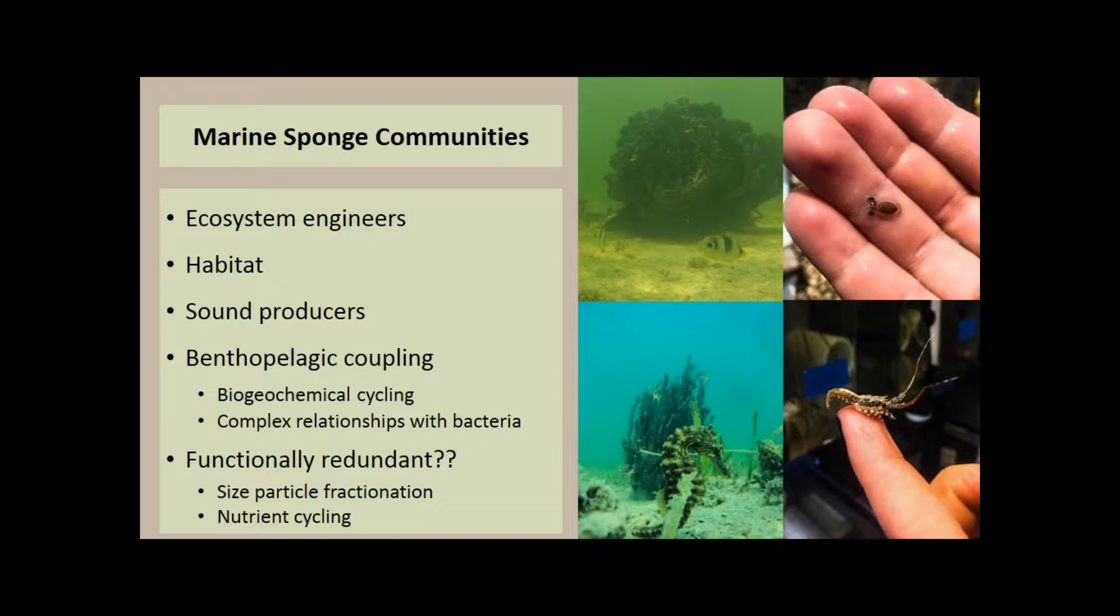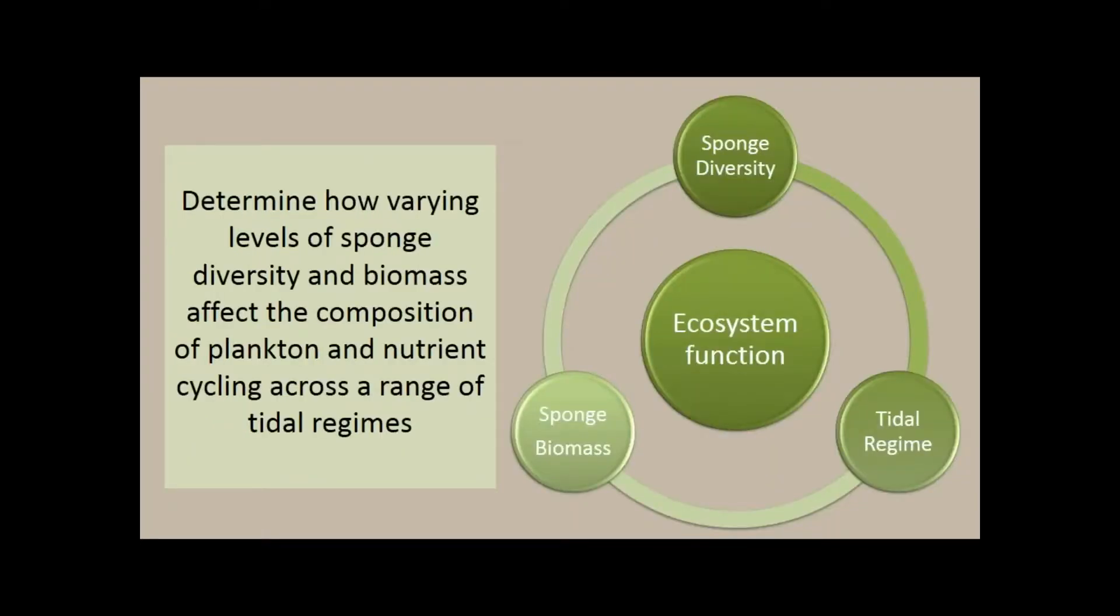We have sponges that are high microbial abundance. They have lots and lots of bacteria in their tissues. And then we have sponges that are low microbial abundance. They have very few bacteria in their tissues. And each sponge species has a very unique community. So the question is, are all these sponges functionally redundant in how they affect their local environment?